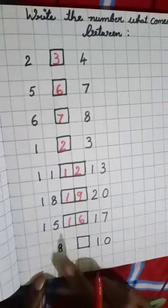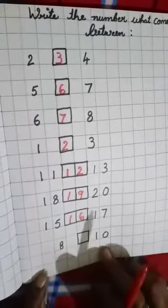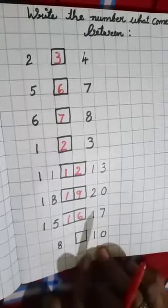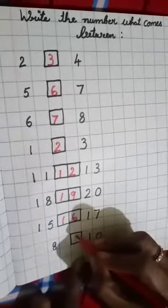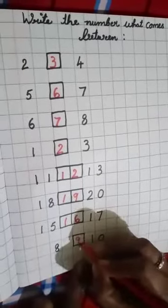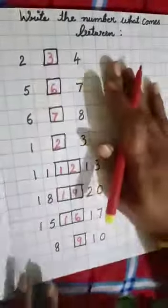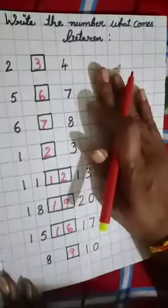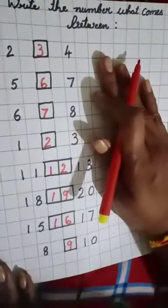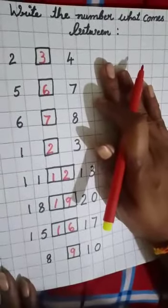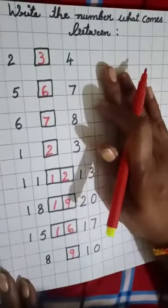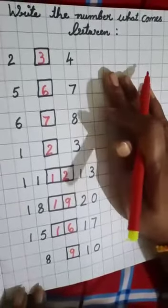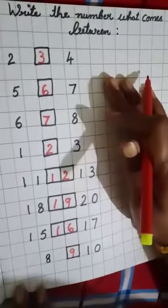Between 8 and 10, which number will come, students? 9. Okay. This way you have to write in the notebook also. Write properly and neatly and practice it at home. Thank you.